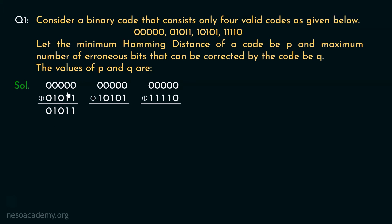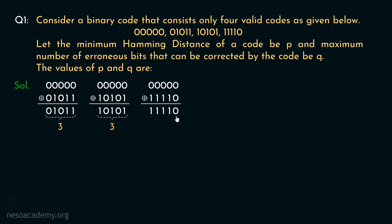Now let's count the set bits — the number of ones in this particular code. It is 3. So basically, the Hamming distance between this code and this code is 3. Coming to this one, here also we will get this particular code as the result. If we count the number of set bits, it is also 3. Therefore, the Hamming distance between this code and this code is also 3. Now finally in here, we will get the result — 4 ones followed by a 0 — so the number of set bits is 4, and the Hamming distance is 4.